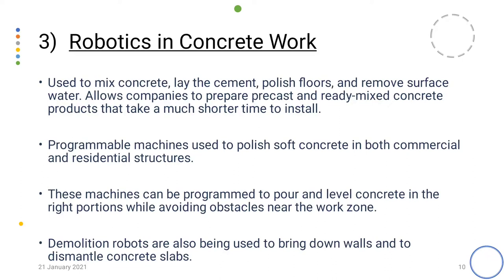The third example is robotics in concrete work. Automation in construction has also found its way into concrete mixing. Controlled systems and robotics are being used to mix concrete, lay the cement, polish floors and remove surface water. This allows companies to prepare pre-cast and ready-mixed concrete products that take a much shorter time to install. Programmable machines are used to polish soft concrete in both commercial and residential structures. Automation reduces material consumption and eliminates human error in concrete works. These machines can be programmed to pour and level concrete in the right proportions while avoiding obstacles. Demolition robots are also being used to bring down walls and dismantle concrete slabs, resulting in lower operational costs and a safer working environment.